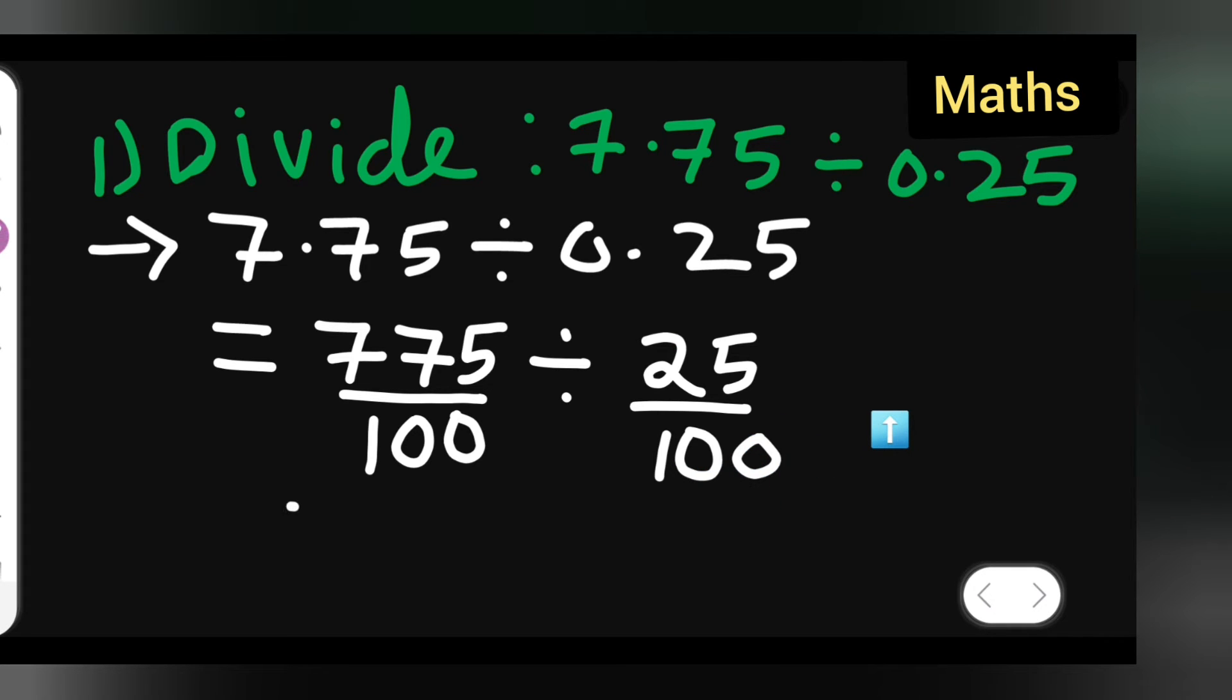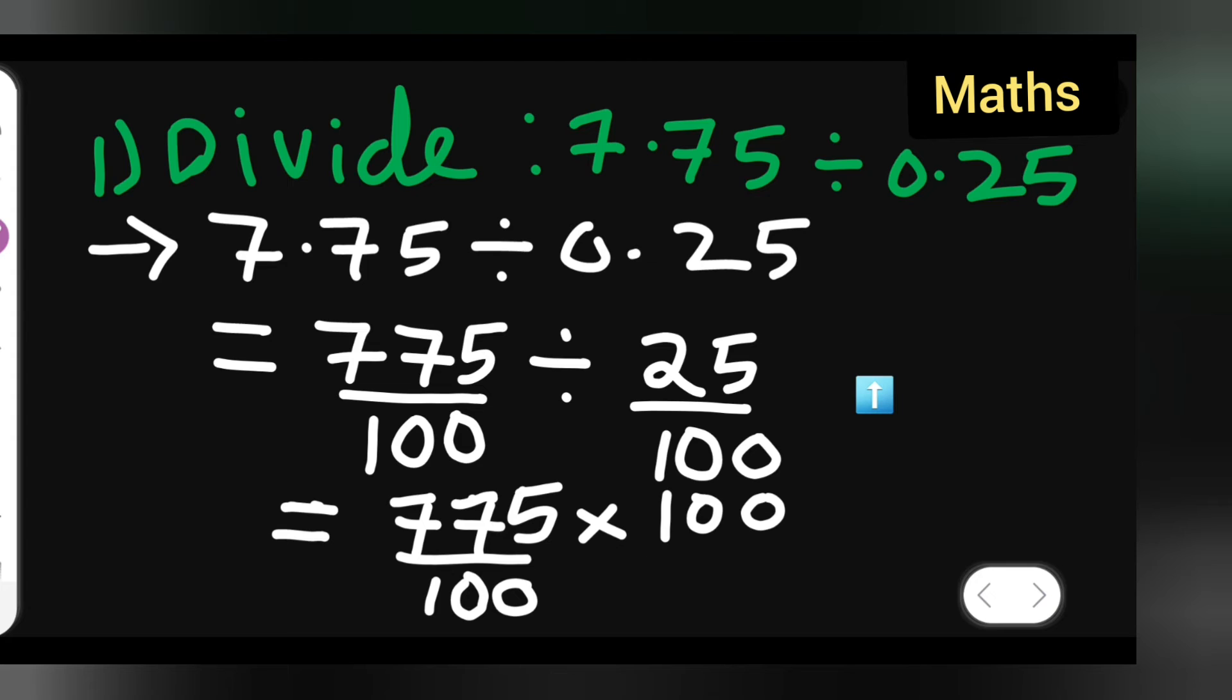Now what you have to do is when you are dividing these numbers, 775 upon 100, multiply it with the reciprocal of this. This is the perfect way of dividing. So 775 upon 100 multiplied by 100 upon 25.